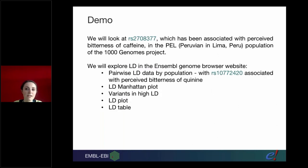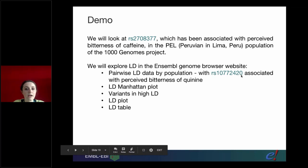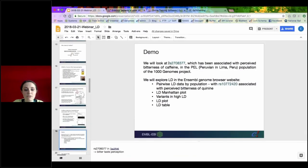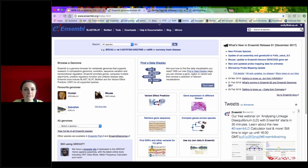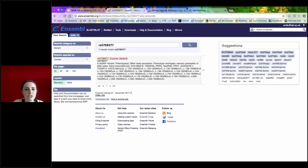We're going to look at one of these variants associated with the perceived bitterness of caffeine, and explore the LD by population in the PEL population - Peruvians in Lima - from 1000 Genomes Phase 3. I'm going to hop out of my presentation, copy this variant identifier, go to the Ensembl homepage, put my variant into the search box and hit go. That takes me to a search result and I'll click on my variant.